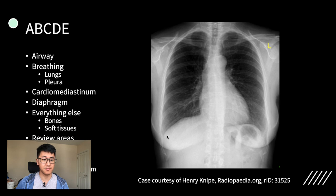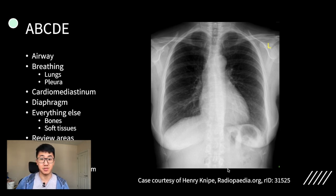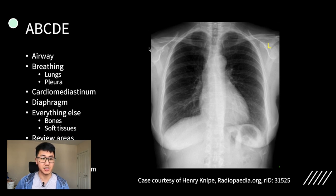Next, D is for diaphragm. For this, you'll look at both hemidiaphragms. The right should be above the left. Underneath the left, you'll often get the gastric bubble. But also don't forget that there could be things in the abdomen that you end up catching, so sometimes you will get a gallstone or a kidney stone that's visible. Next, you look at everything else, which is essentially the bones, so that's checking the scapulae, the clavicles, all of the ribs, and the vertebral column because you might see a fracture.